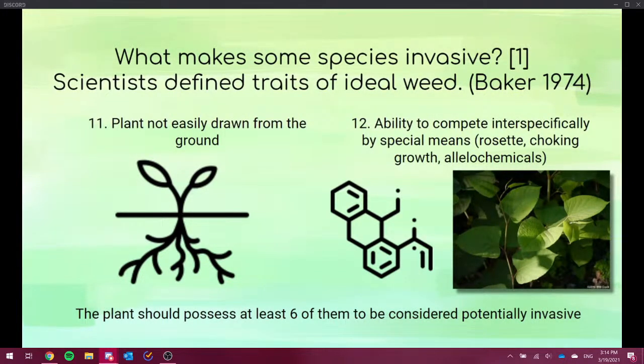Then we have plant not easily drawn from the ground. Because again, the extensive root system helps depleting nutrients and also helps taking up water, which is necessary for vegetative growth, especially for growth of leaves. Then we have the ability to compete interspecifically by special means, choking growth allelochemicals. This is especially interesting because there is a new hypothesis, a novel weapon hypothesis.